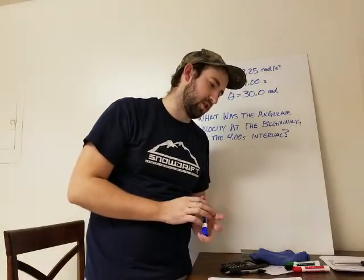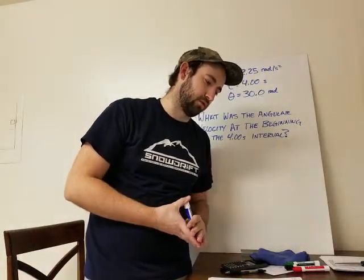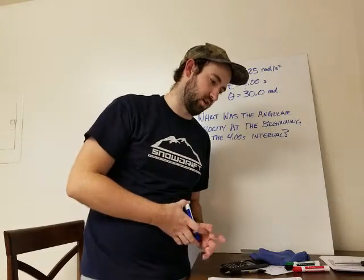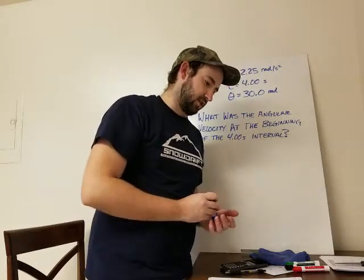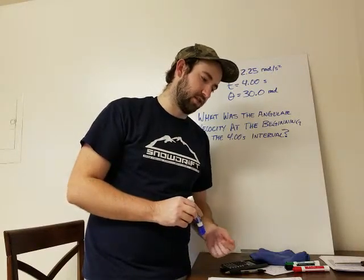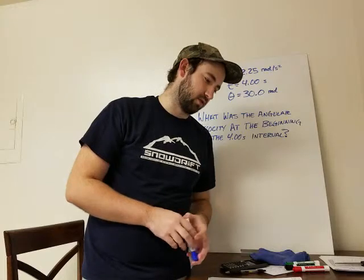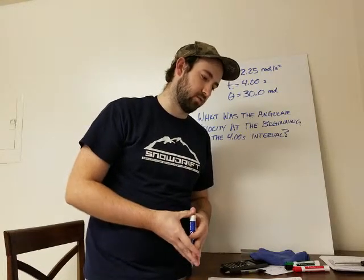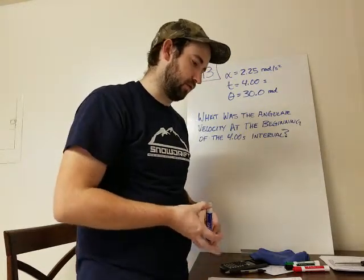A turntable rotates with a constant 2.25 radians per second squared angular acceleration. After 4 seconds, it is rotated through an angle of 30 radians. What was the angular velocity of the wheel at the beginning of the 4-second interval?